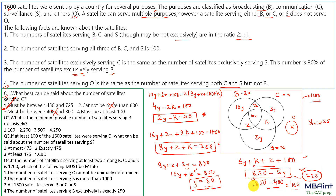Question 2 asks: what is the minimum possible number of satellites serving B exclusively? The exclusive B region is 10y. The minimum value of y is 25, so the minimum value of 10y is 250.